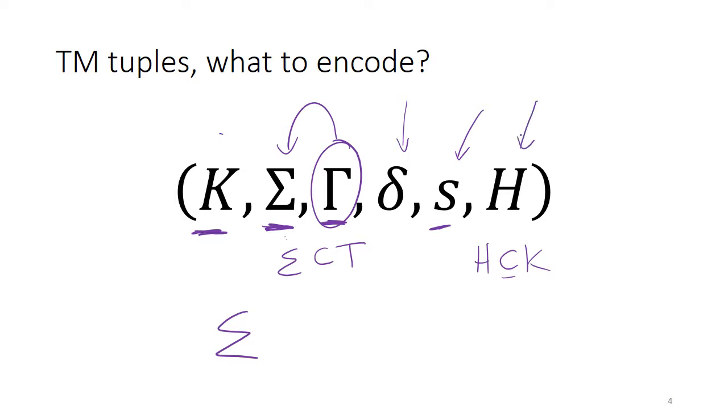So in reality, all we need to encode is K, Gamma, and Delta. And everything else will already be encoded. One of the things that we will do is we will encode something special about S, so that we always know which one is the start state.